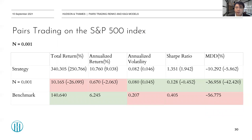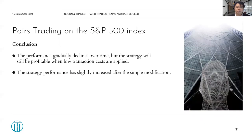A quick conclusion about the S&P 500 backtesting: performance gradually declines over time, possibly because trading fees have dropped significantly, making the market more efficient. However, the strategy remains profitable when low transaction costs are applied.